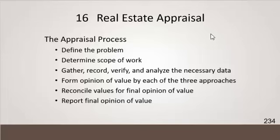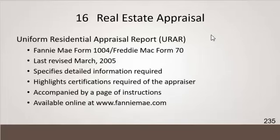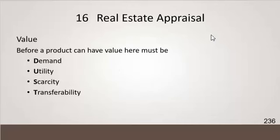The URAR — the Uniform Residential Appraisal Report — has all the data captured: all the general data, all the specific data, and it's accompanied by supporting documents like pictures, maybe police reports if it's a crime area. You can get this form anywhere — just Google 'form 10-04.' That's exactly what I did when I needed the form. It's six pages. They call it the UAR, or in this book, the URAR, which is just thinking about residential.